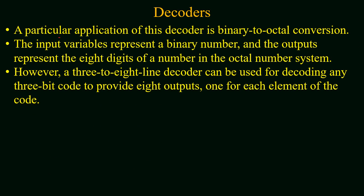A particular application of this decoder is binary-to-octal conversion. The binary-to-octal conversion circuit takes a binary input and produces an octal output. The input variables represent a binary number and the output represents the equivalent number in the octal number system. However, a three-to-eight line decoder can also be used for decoding any three-bit code to provide eight outputs, with one output used for each element of the code.